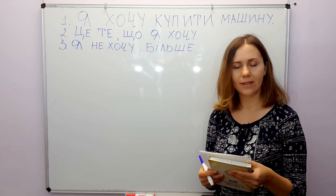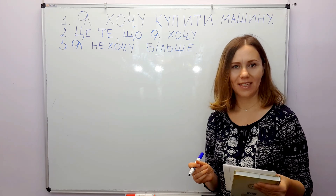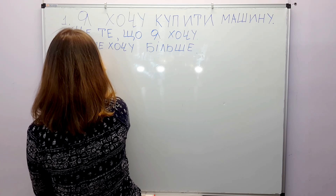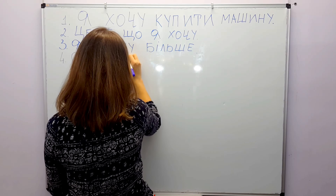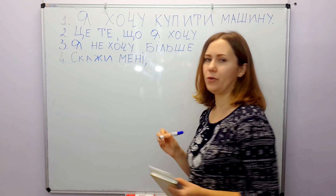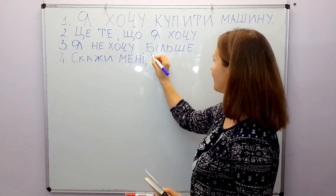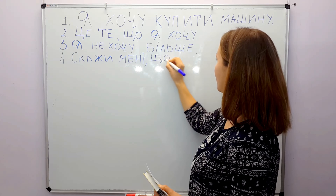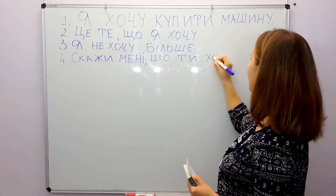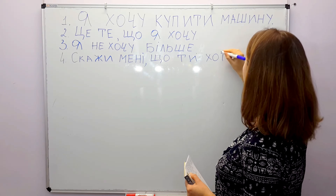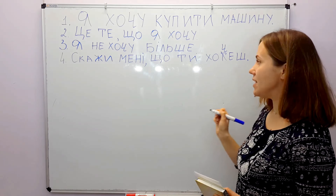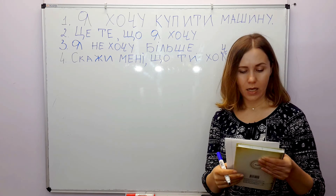Tell me what you want. Скажи мені — tell me. What — що? You — ти. For 'you' the verb form is хочеш. Скажи мені, що ти хочеш. Наступне.